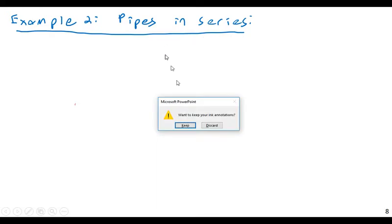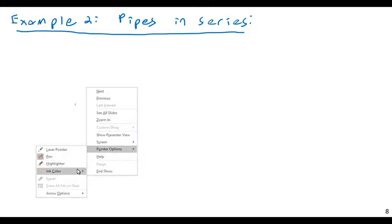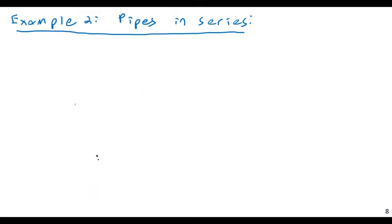Okay, so let me work through example two. Let's say example two, pipes in series. Now, we could also look at pipes in parallel, but that's really a topic for another class. So I'm going to consider a system, again, full of water, with a mu, our dynamic viscosity, equal to 2.34 times 10 to the negative 5 pound seconds per square foot, and our rho water, our density, equal to 1.94 slugs per cubic feet.